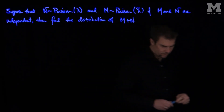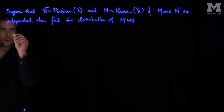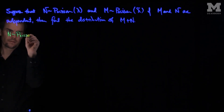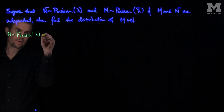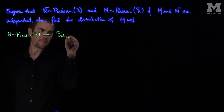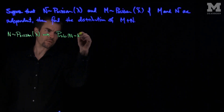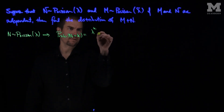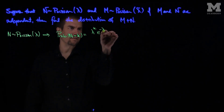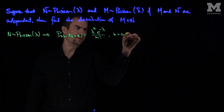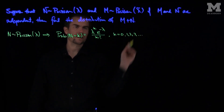Here we can recall the definition of Poisson. n ~ Poisson(lambda) implies that the probability that n equals k is lambda to the k, e to the negative lambda, over k factorial, for k equals 0, 1, 2, 3, etc.